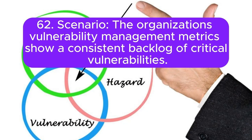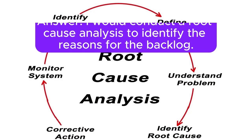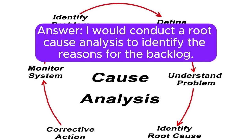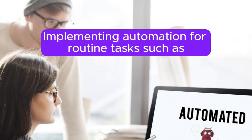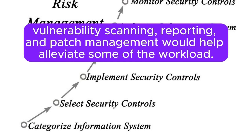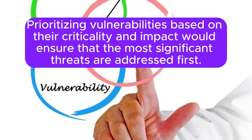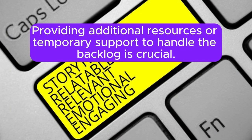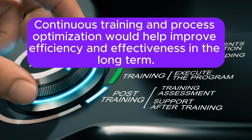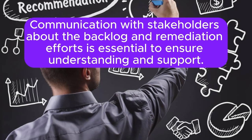Scenario 62: The organization's vulnerability management metrics show a consistent backlog of critical vulnerabilities. How do you address this? I would conduct a root cause analysis to identify the reasons for the backlog. Implementing automation for routine tasks such as vulnerability scanning, reporting, and patch management would help alleviate some of the workload. Prioritizing vulnerabilities based on their criticality and impact would ensure that the most significant threats are addressed first. Providing additional resources or temporary support to handle the backlog is crucial. Continuous training and process optimization would help improve efficiency and effectiveness in the long term. Communication with stakeholders about the backlog and remediation efforts is essential.